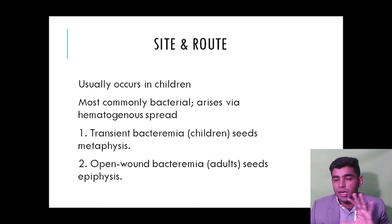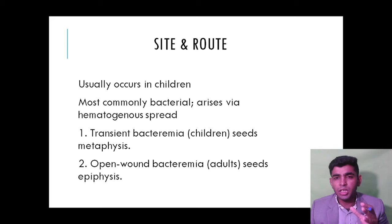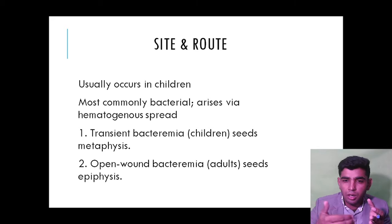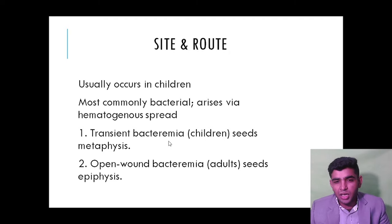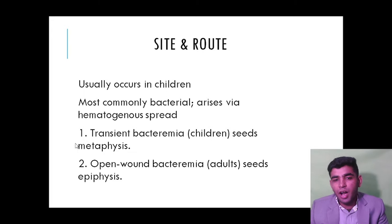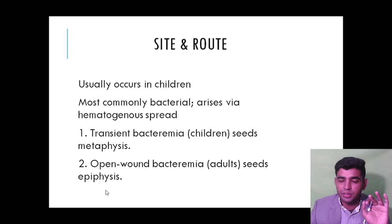The most common site and route: osteomyelitis usually occurs in children. The most common bacteria arise via hematogenous spread — meaning through the blood. This is transient bacteremia. In children, infection seeds the metaphysis. In adults, it mainly lies in the epiphyseal area.